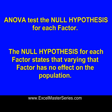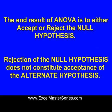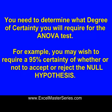An ANOVA tests the null hypothesis for each factor, and the null hypothesis for each factor states that varying that factor has no effect on the population. The end result of ANOVA is to either accept or reject the null hypothesis. And if you reject the null hypothesis, it doesn't automatically mean that you accept the alternate hypothesis that varying the factor has an effect on the population.